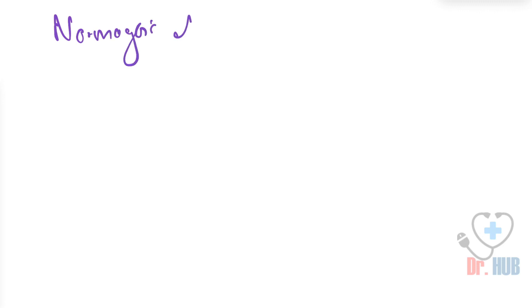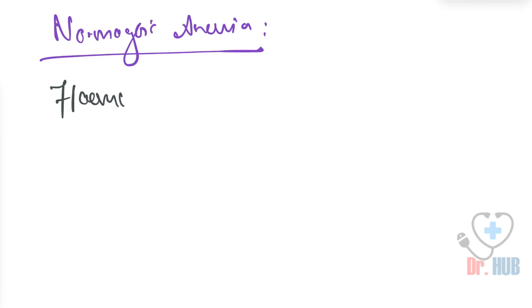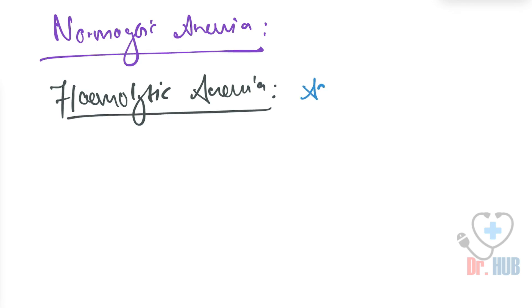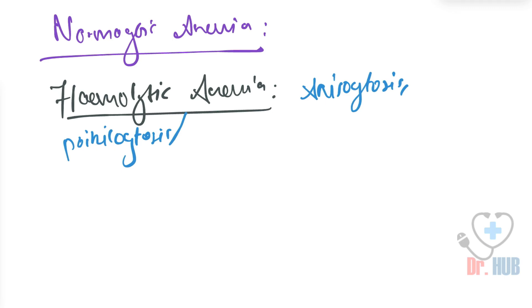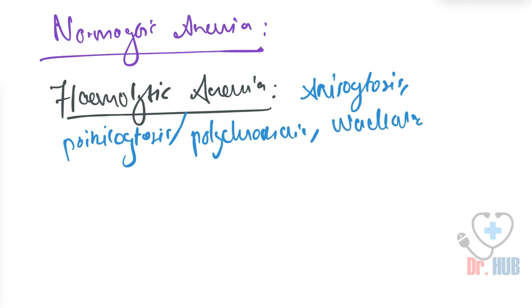Now moving on to normocytic anemia. Under normocytic anemia, we first look at hemolytic anemia. The peripheral smear in hemolytic anemia includes anisocytosis, poikilocytosis, polychromasia, and nucleated red cells.